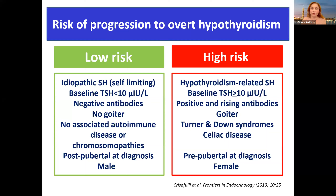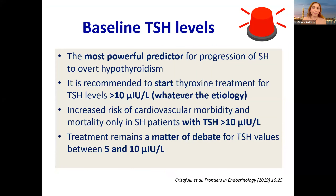What about baseline TSH as a risk factor? It is the most powerful predictor for progression of subclinical hypothyroidism to overt hypothyroidism. It is recommended by most references to start thyroxine if TSH exceeds 10 in any child, whatever the etiology — because we are worried about height, weight, and cognitive function. There is also increased risk of cardiovascular mortality and morbidity if TSH exceeds 10 on the long run.